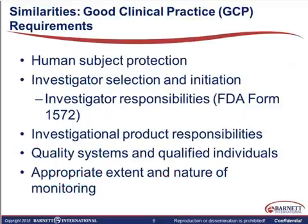To begin, it's important to understand that the core GCP requirements do not differ between oncology trials and those in other therapeutic areas. Requirements for informed consent, appropriate investigator selection, and investigator responsibilities as detailed in the 1572 still apply to oncology trials with investigational drugs. Furthermore, investigators are still required to maintain control of investigational products, and sponsors have standard responsibilities for providing information about IP use and storage. Oncology trials have to be managed and conducted by qualified individuals at all levels — at the site, IRB, sponsor, and CRO — within quality systems designed to ensure quality output and human subject protection.